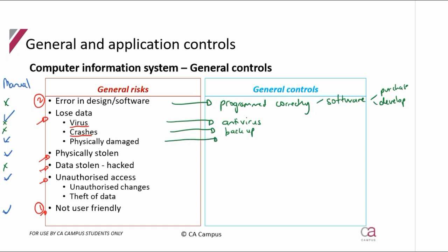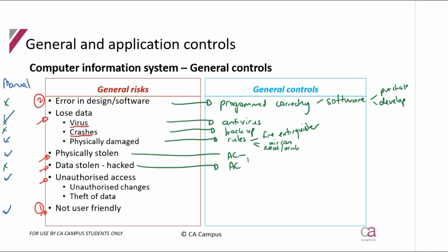To make sure it doesn't get physically damaged, they have to have rules: a fire extinguisher in case of fires, air conditioning to keep it cool so it doesn't overheat, and no eating around it. To prevent it from being physically stolen: physical access controls — security and locking. To prevent data from being stolen and hacked: logical access controls — passwords, usernames, restrictions so you can't get in, and firewalls.